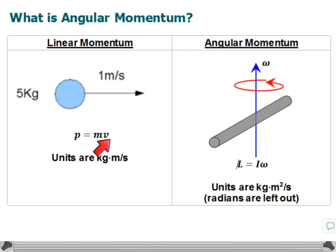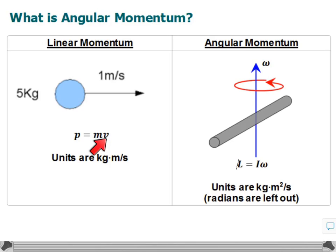The units for momentum are the units of mass times the units of velocity. Something that's rotating has what we call angular momentum in physics. So if we have some rigid body, like a rod, that is rotating around its center, then it will have what we call angular momentum. The way we figure out angular momentum is we multiply rotational inertia times angular speed, just like for linear momentum we multiplied inertia, which is mass, times velocity or times speed.